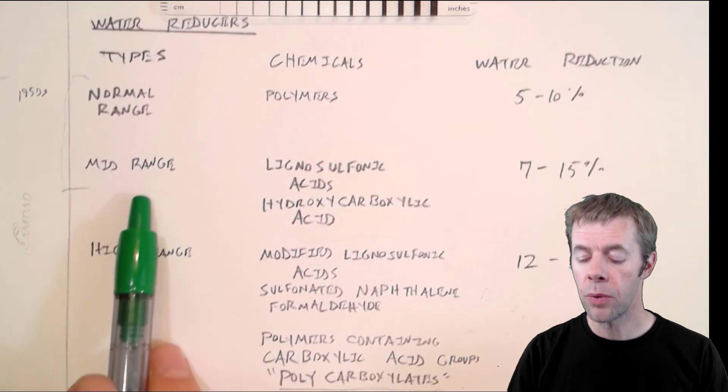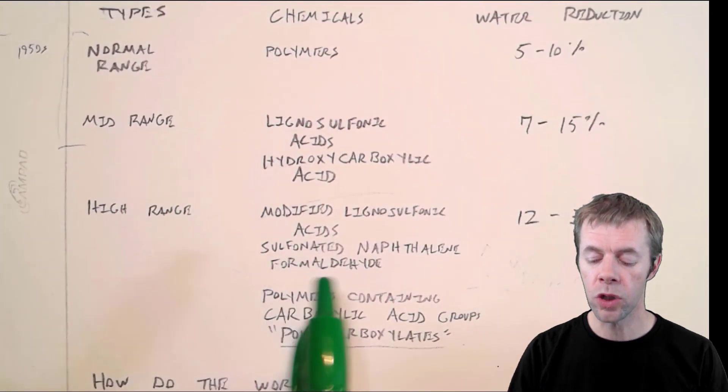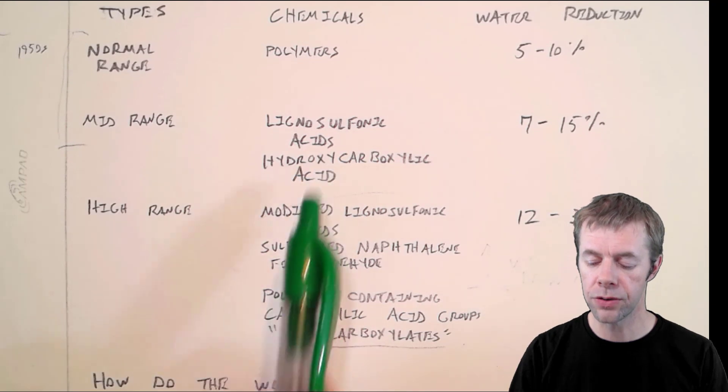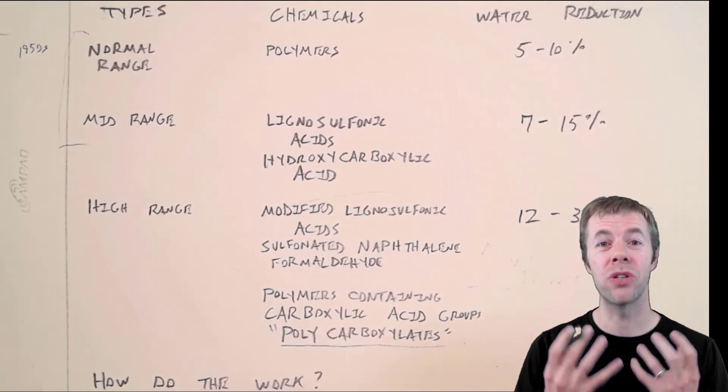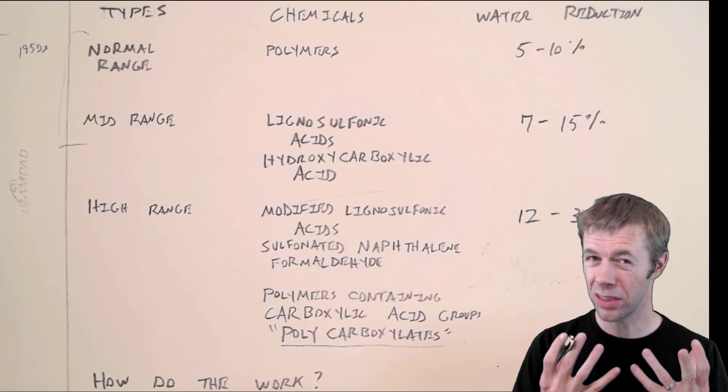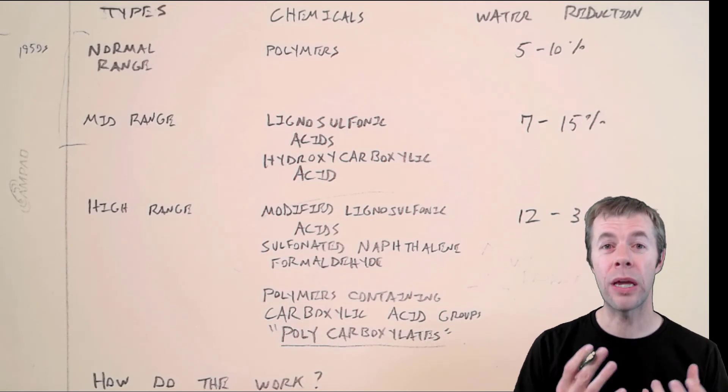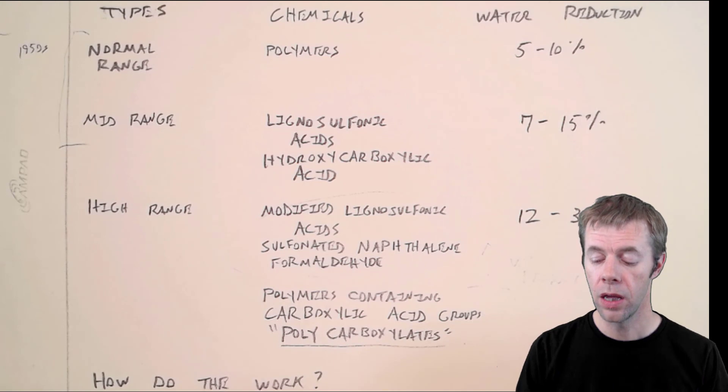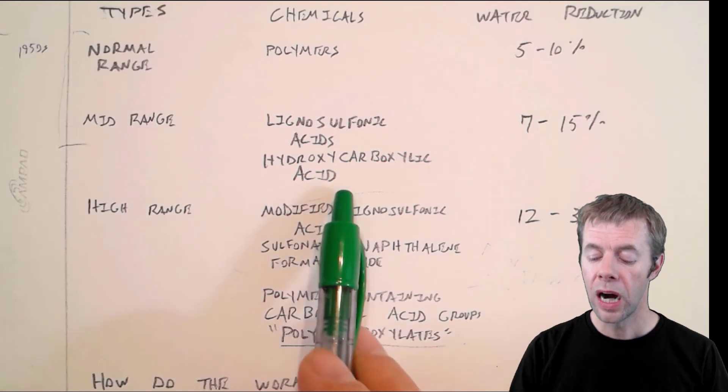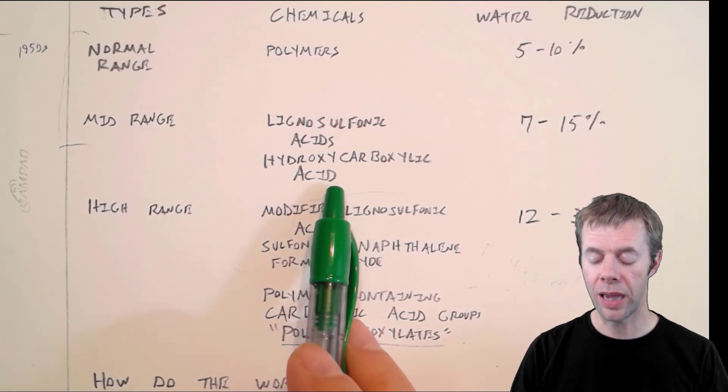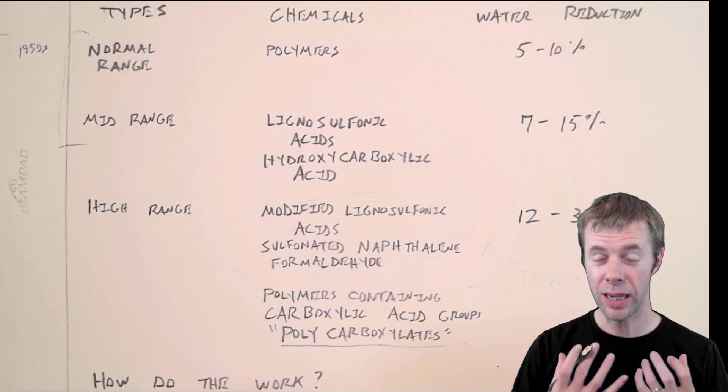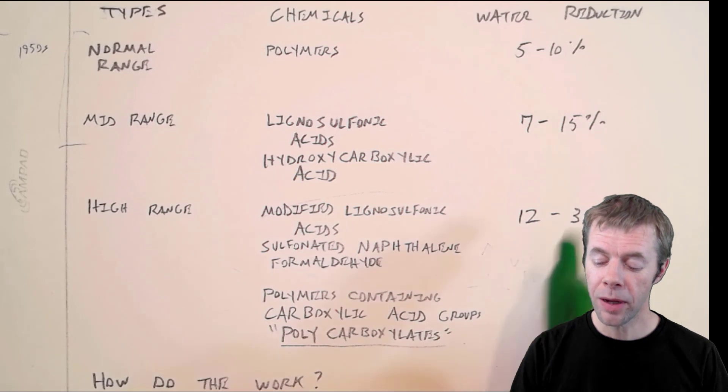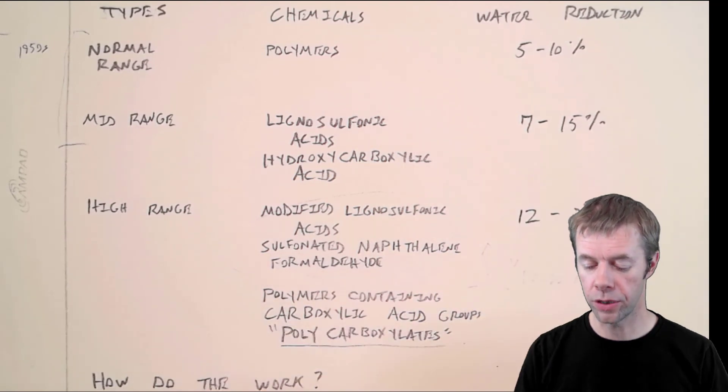Then they moved on to mid-range water reducers. Those were a little bit more specialized. Lignosulfonates - these are actually admixtures that are from lignin, like paper products, wood products. Then they moved on to hydrocarboxylic acids from the oil industry. Again, waste products. And you would get about 7% to 15% water reduction.